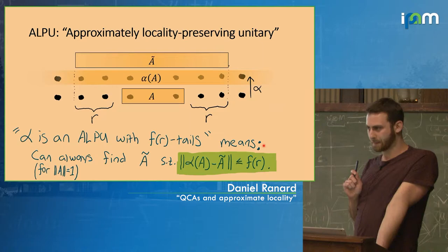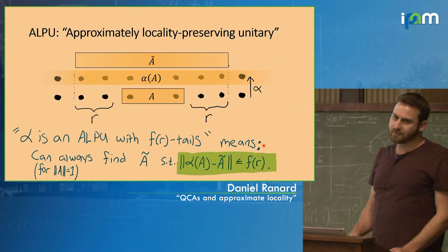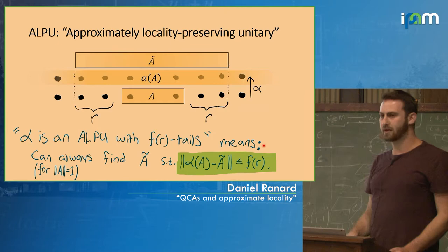This is a crucial definition. The things I'll prove will be true basically for any f that decays to zero — pretty weak assumptions on the tails.